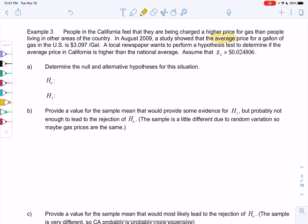I noticed the word average, so we're in mean land, no proportions. So a local newspaper wants to perform a hypothesis test to determine if the average price in California is higher than the national average and assume sigma is 0.024806. So that sounds like a hypothesis to me.